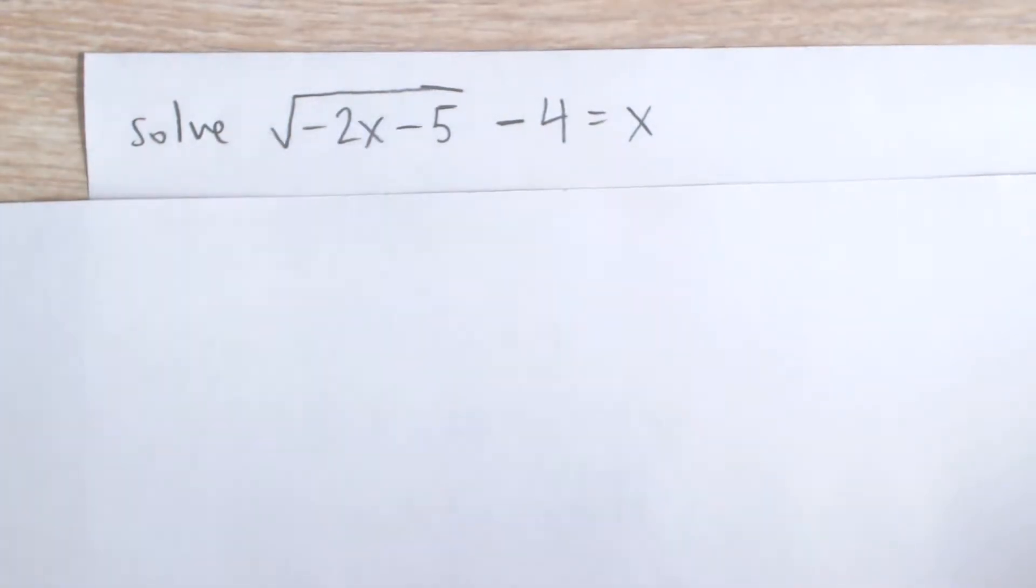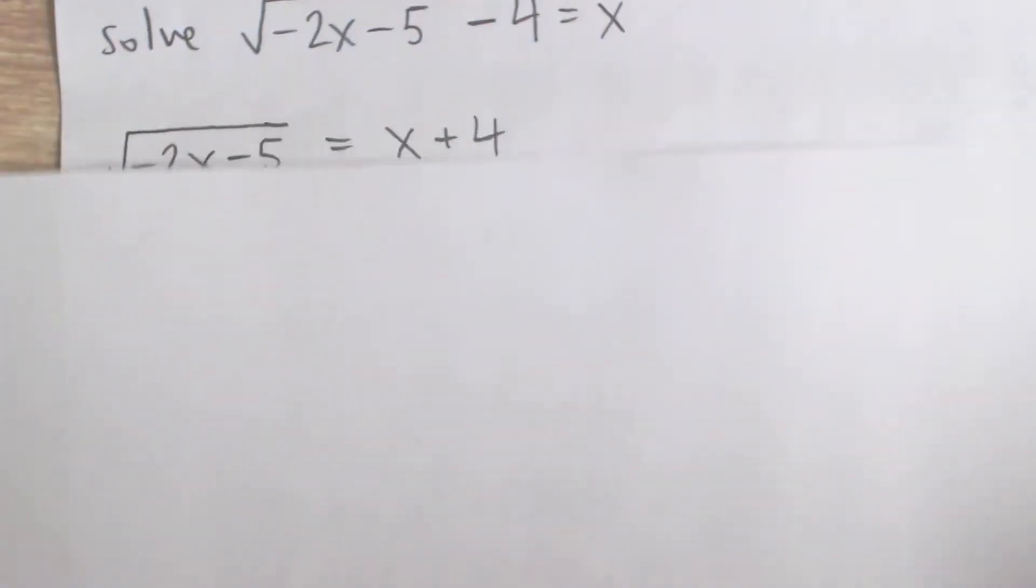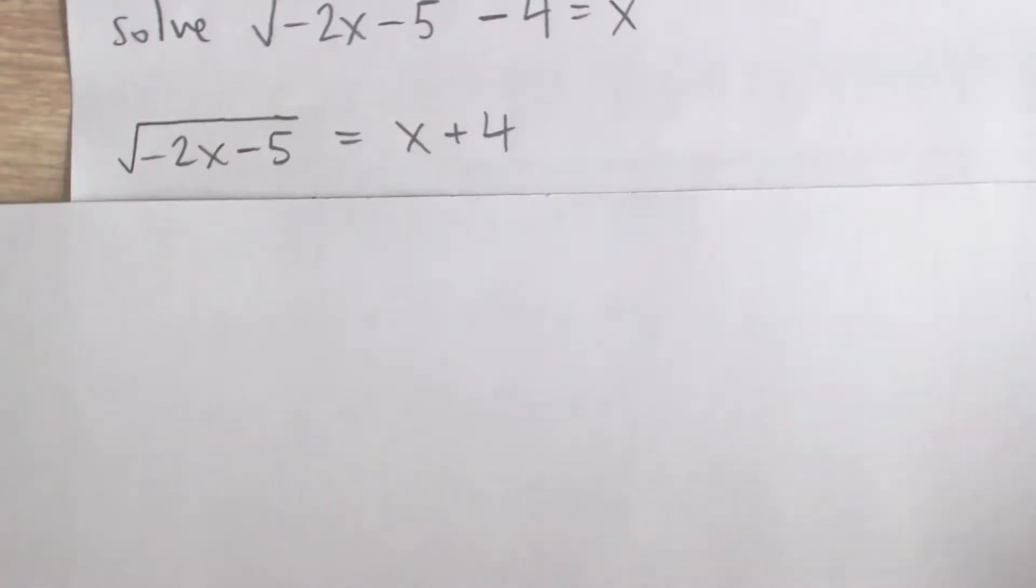Add 4 to both sides, so we get rid of that negative 4 on the left side of the equation. There we go. We have x plus 4 on the right.